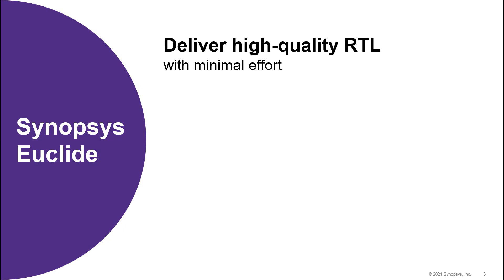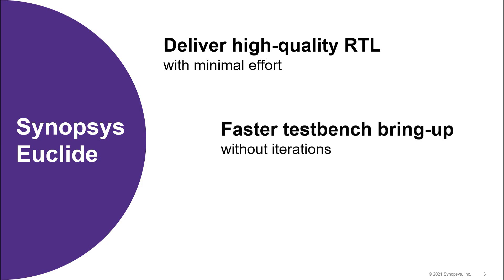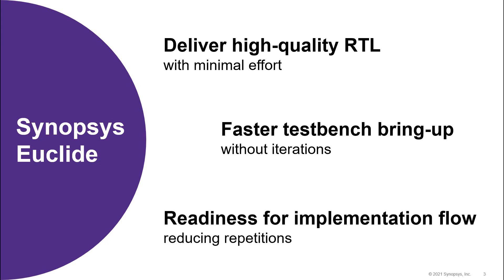The solution to address the aforementioned requirements and many more is Synopsys Euclid. Euclid provides a significant productivity boost in your development cycle. It enables correct-by-construction coding using which you can achieve a higher quality RTL. Its powerful language engines with SystemVerilog and UVM support results in faster test bench development. Lastly, a typical code developed using Euclid will have minimal implementation bugs, thereby shortening the overall turnaround time.